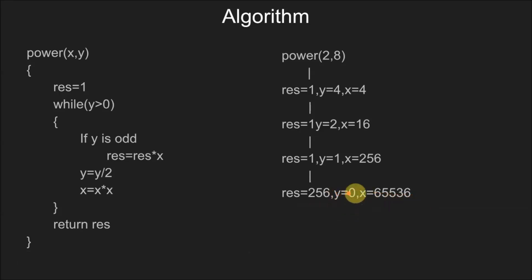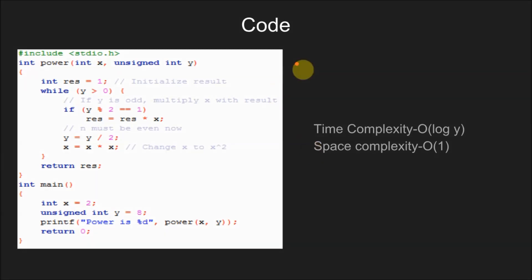This time the loop ends as y is not greater than 0, so result is returned, which is 256, our final answer. This is the code of the solution.